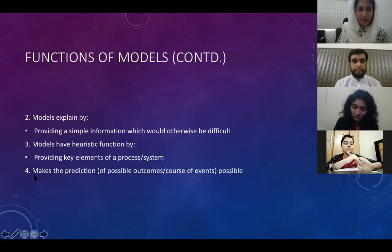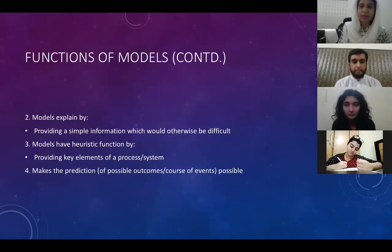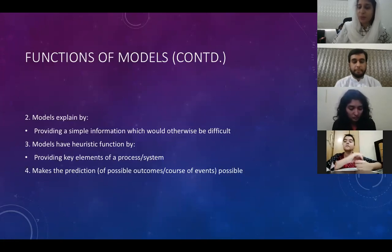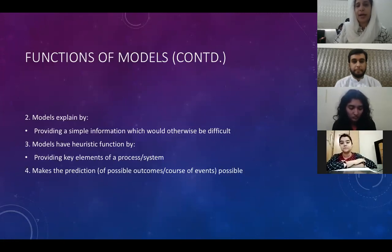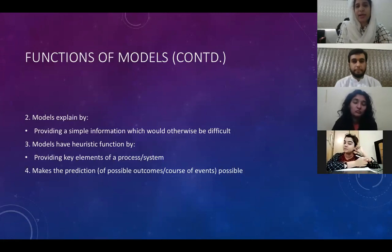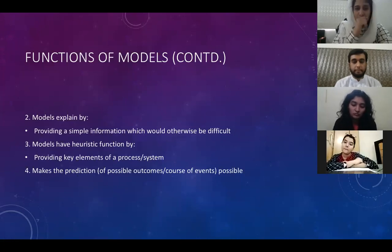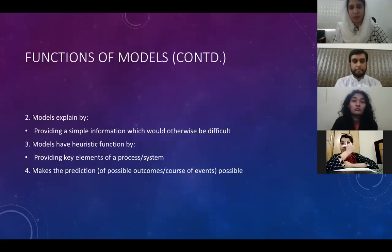The fourth point says that models help us predict events. By looking at models, you can predict the process — this is what is happening and this is where the situation may lead to. Models help us predict things and increase the possibility of prediction. These are some of the functions that models perform for us.